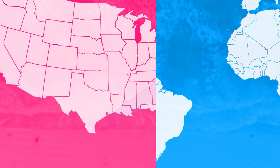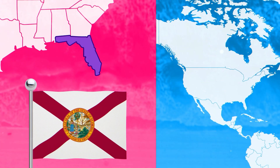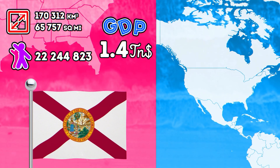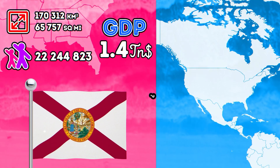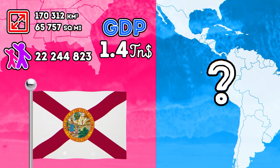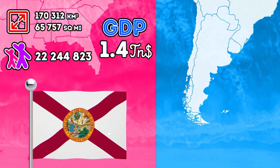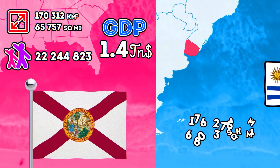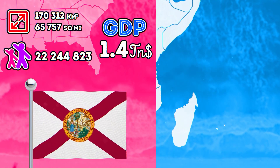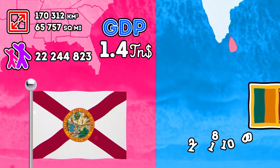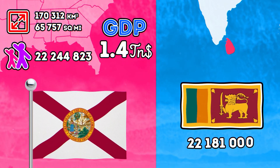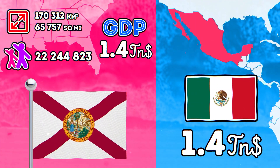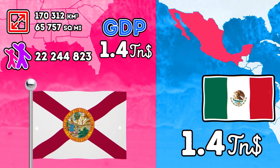Let's move to the south of the United States, to Florida. It's the third most populous state in the United States and the fourth highest in GDP. Florida is slightly smaller than Uruguay. The population is almost the same as in Sri Lanka. And the state's GDP is truly impressive and comparable to Mexico.